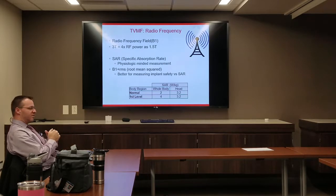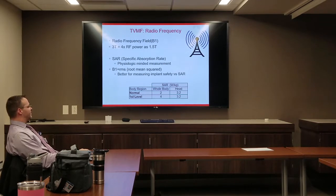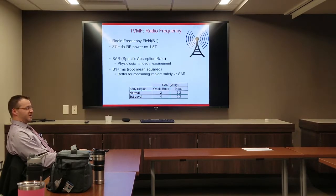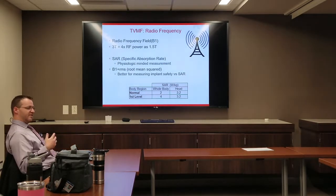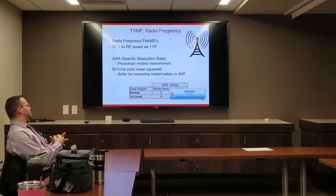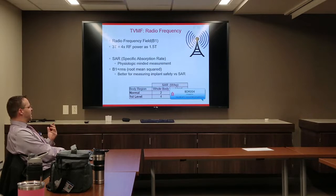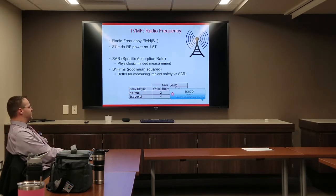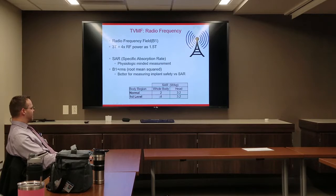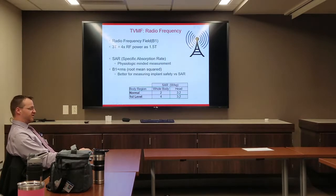Radio frequency fields are another form of time-variant magnetic field, also known as the B1 field. At 3 Tesla, the RF power is 4 times that at 1.5T — so maintaining SAR levels for an implant is much easier at 1.5T. For very large or obese patients where heating is a concern, 1.5T will also result in less heat. The two measurement methods are SAR (specific absorption rate), which is physiologically minded and accounts for patient height and weight, and B1+RMS (root mean squared), which is better for measuring implant safety. Operating modes include normal mode (2 W/kg whole body) and first level mode (4 W/kg whole body); head SAR is always 3.2 W/kg regardless of mode.